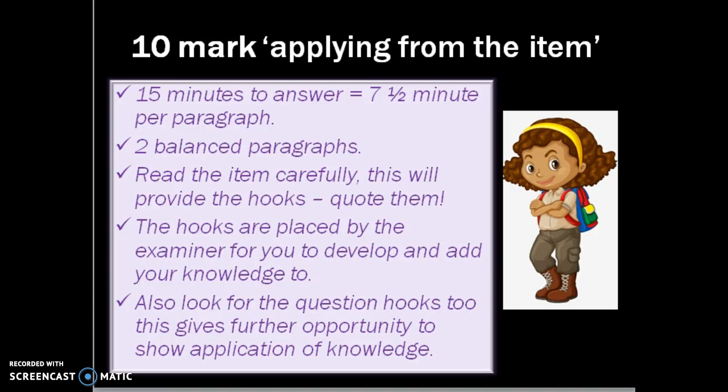A quick reminder about what the 10-mark question is, as it appears on all three papers. Paper one: it is in the education section. Paper two: each topic will have two 10-markers and one of them will be with an item. Paper three: it will be in the crime section. You have 15 minutes to answer — seven and a half minutes per paragraph — producing two clear, balanced paragraphs. Make sure you read the item carefully because it will provide the hooks. Quote them or put them in your own words as long as it looks like it comes from the item. The hooks are there for you to develop your knowledge from, and also look for the question hooks because you need to apply it to the question.